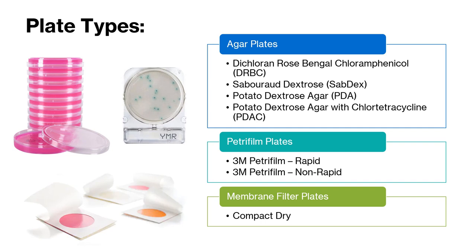Next we have Petri film plates. These are pre-made plates that contain a culture medium and a water-soluble gelling agent as an indicator to assist with enumeration of the colonies that grow. For total yeast and mold there are rapid and non-rapid Petri film plates — the only difference being that colony growth occurs in a shorter time period on the rapid plate, so the incubation times are different.